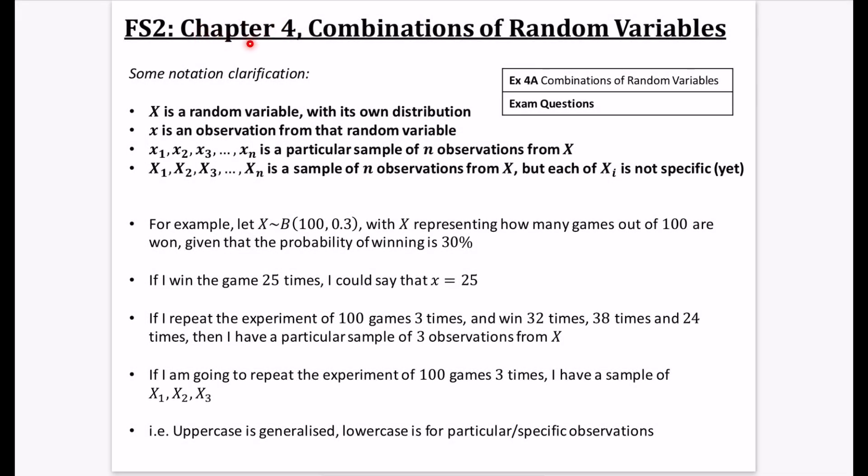Okay, so we're on to chapter four of Further Stats 2, which is something called Combinations of Random Variables. And this is a nice small chapter. It's only got one exercise, and then I'll do some exam questions that go with this.